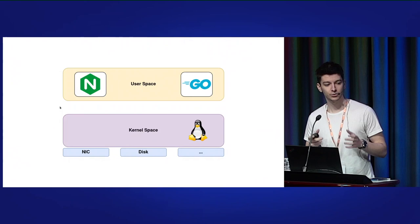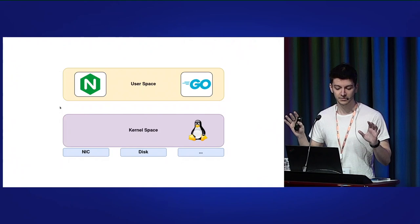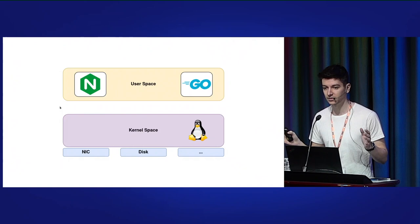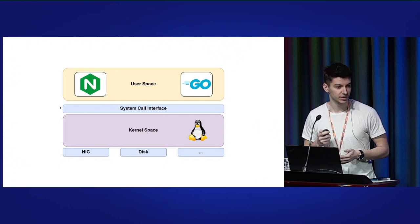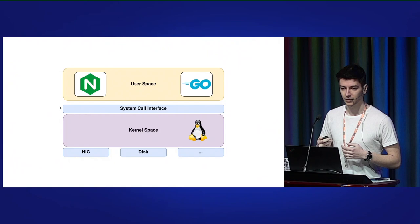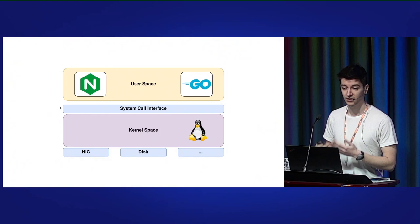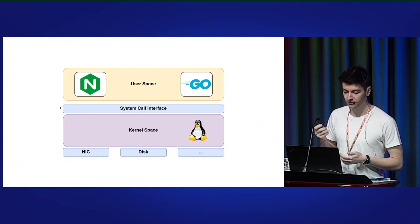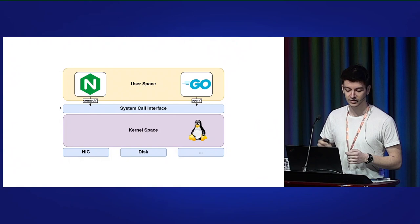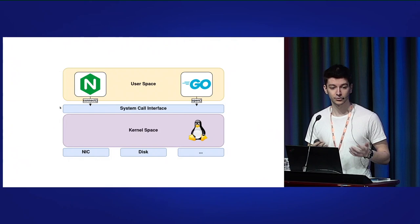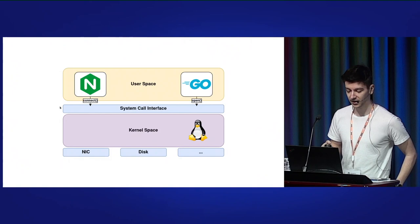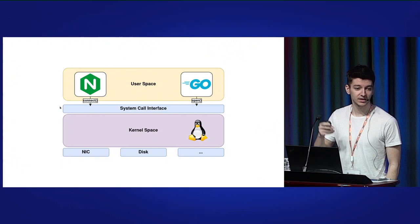Since the kernel itself is an application, we need a way to communicate with it. For example, in a microservice architecture with application A and application B, a common pattern would be a REST API. Similarly, for user space applications to communicate with the kernel, we have an interface called the system call interface. We use this interface all the time, whether we realize it or not — it's often hidden away if you use high-level languages such as Go.